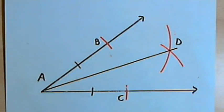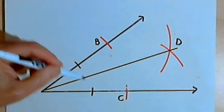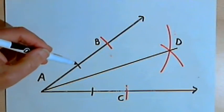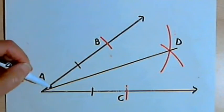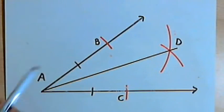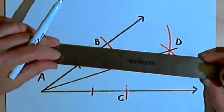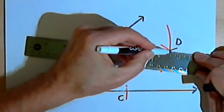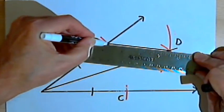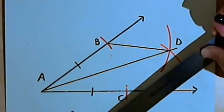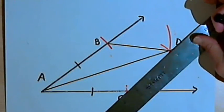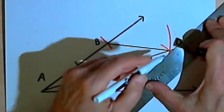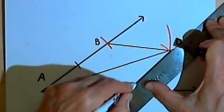Now here's the reason I know I bisected the angle. I have already created... the first step I did was to create two congruent line segments AB and AC. The second step created two more congruent line segments. That was BD and CD. I know they're congruent because I created both of those line segments with the same compass setting.